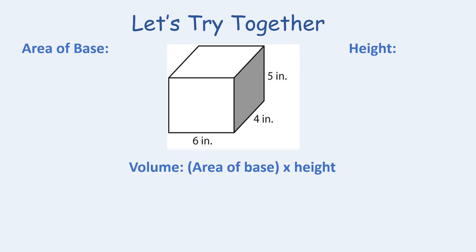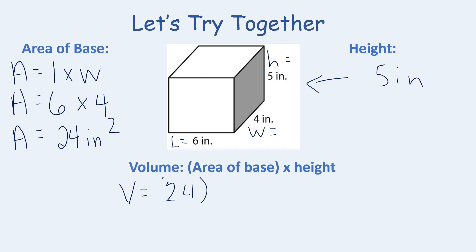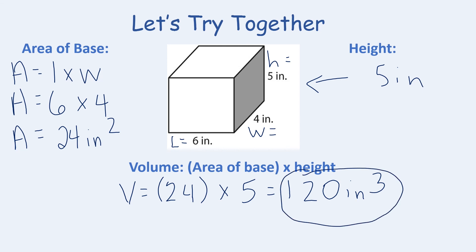Now let's work together to find the volume of the rectangular prism on your screen. Volume is the area of the base times the height. The length is 6, the width is 4, and the height is 5. The area of the base is 6 times 4 equals 24 inches squared. Volume equals 24 times 5, which is 120 inches cubed. That is the volume of this rectangular prism.